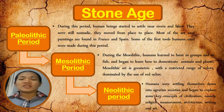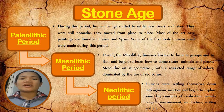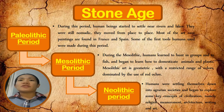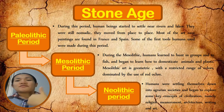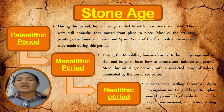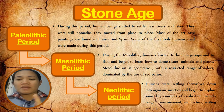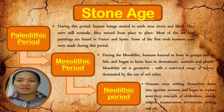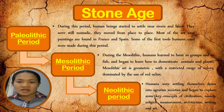Most of the cave paintings are found in France and Spain. Some of the first tools humans used were made during this period. During the Mesolithic period, humans learned to hunt in groups and to fish, and then they began to learn how to domesticate animals and plants. Mesolithic art is geometric with a restricted range of colors dominated by the use of red ochre.